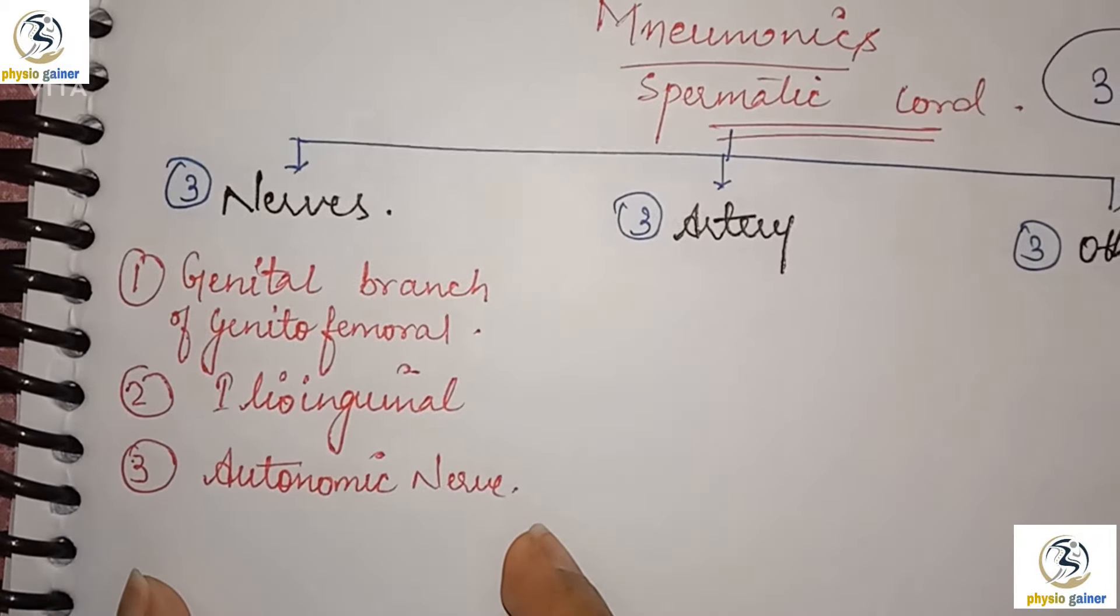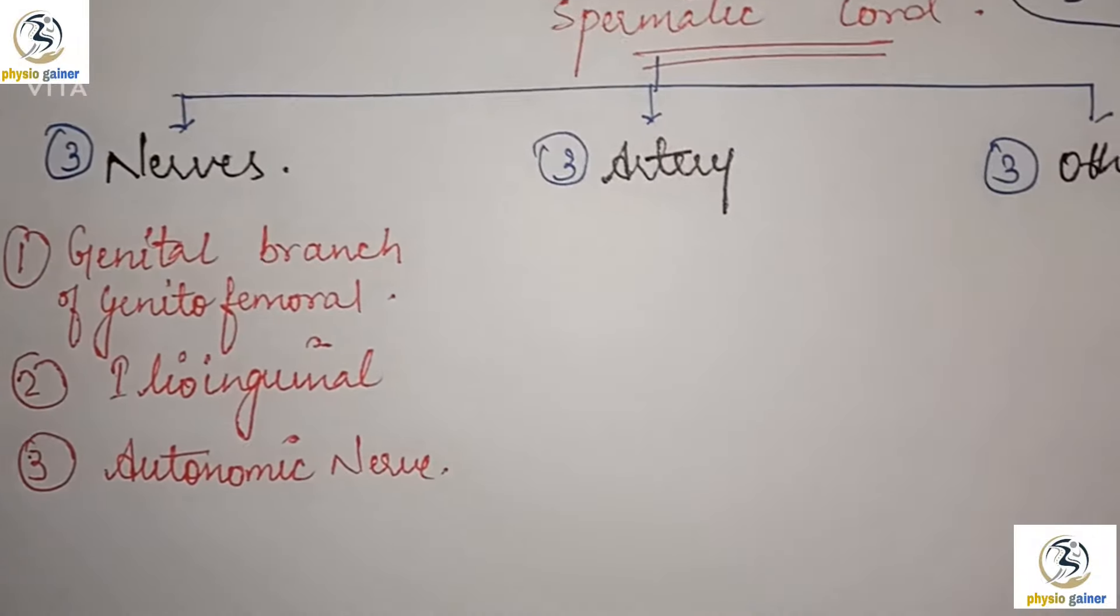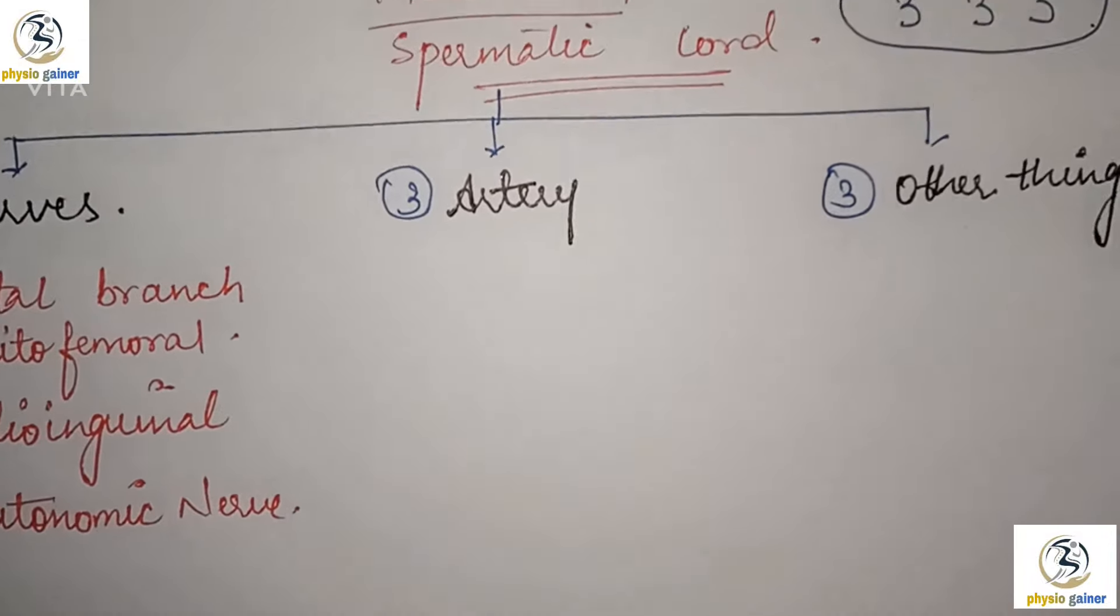So we are done with the nerves. That is genital branch of genitofemoral, ileoinguinal nerve, and autonomic nerve. Now we will move on to the arteries.